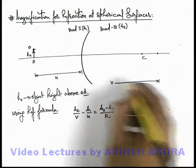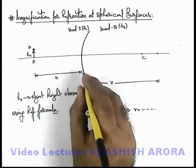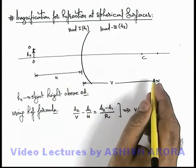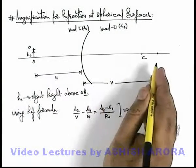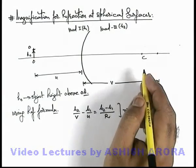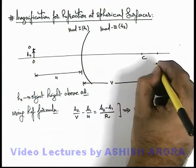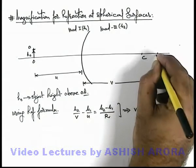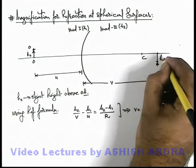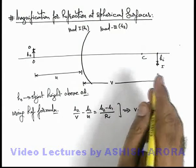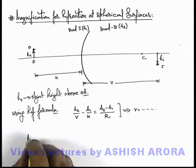Then obviously image will be obtained on the other side only when image is real. For real object when a real image is obtained, it must always be on the other side of optic axis or it is inverted. So here this is the point where image is obtained at a height h_i, which is located at a distance v.